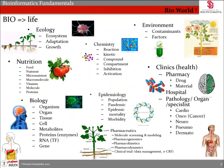The bioworld is too large and complex because there are billions of different elements to study — from the smallest elements like genetic material nucleotides A, C, G, T, and U, to whole ecosystems and environmental factors. The bioworld is complex because each element interacts with every other one, not to mention that some interactions are unknown.